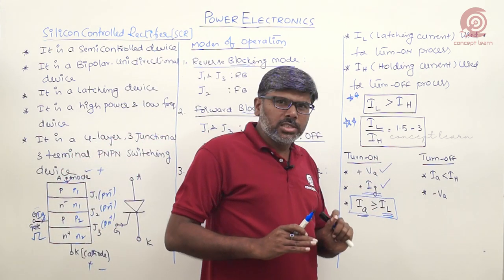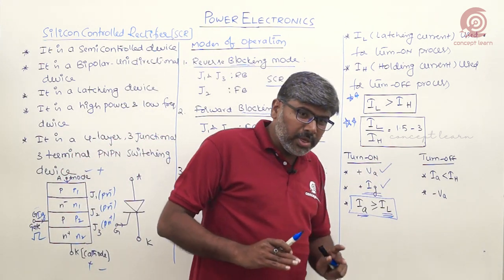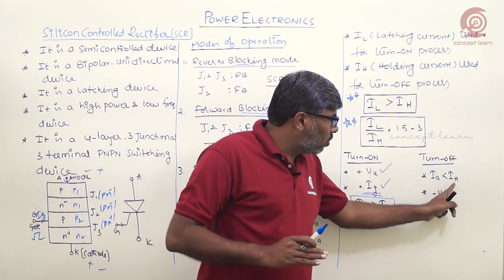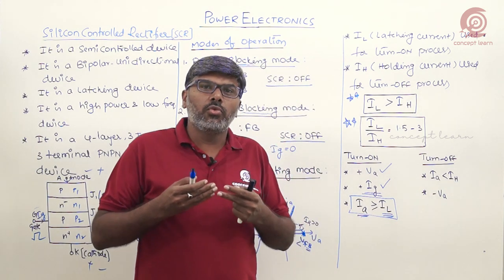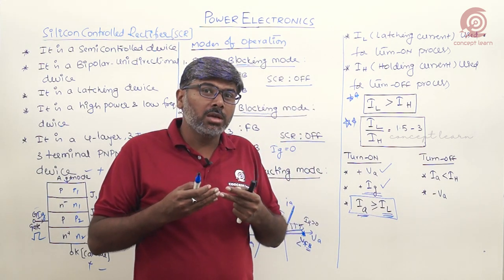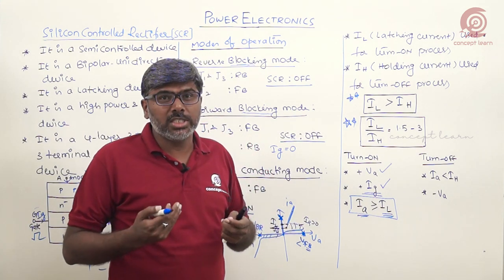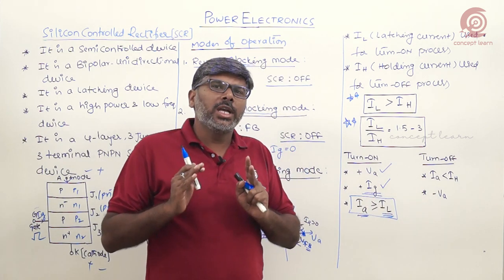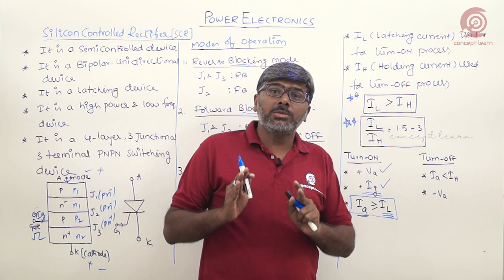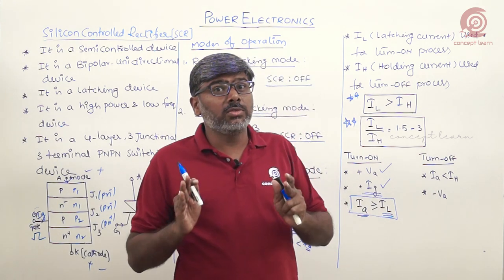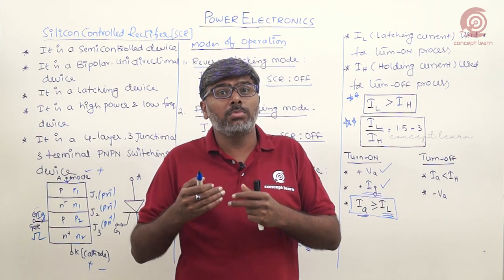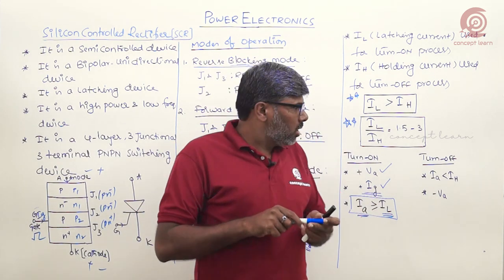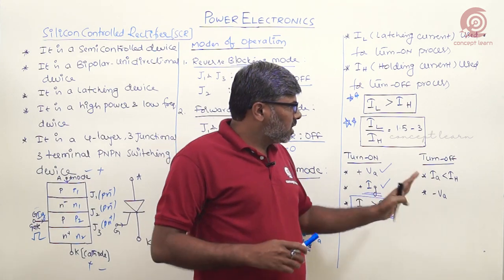For the turn off conditions: the anode current must fall below the holding current. Since holding current is the minimum current below which anode current falls for reliable turn off, the device must also be reverse biased. By reducing the anode current below the holding current using any appropriate technique while the device is reverse biased, SCR comes to the off state.